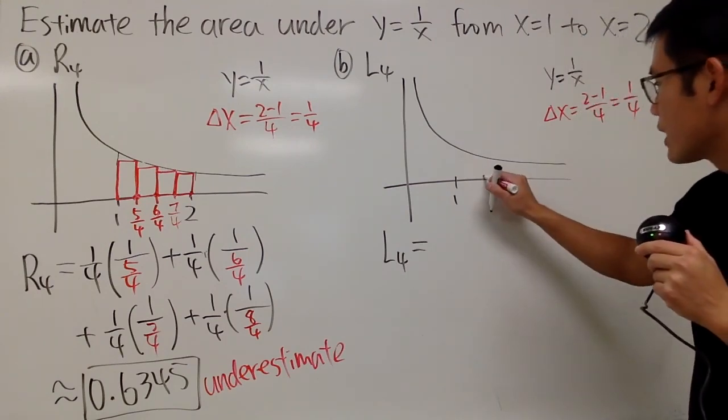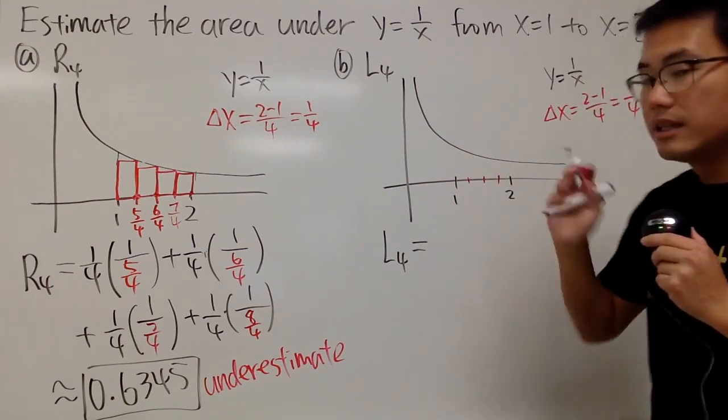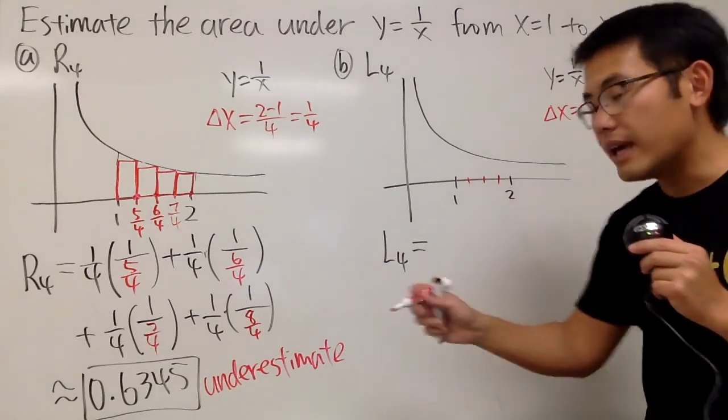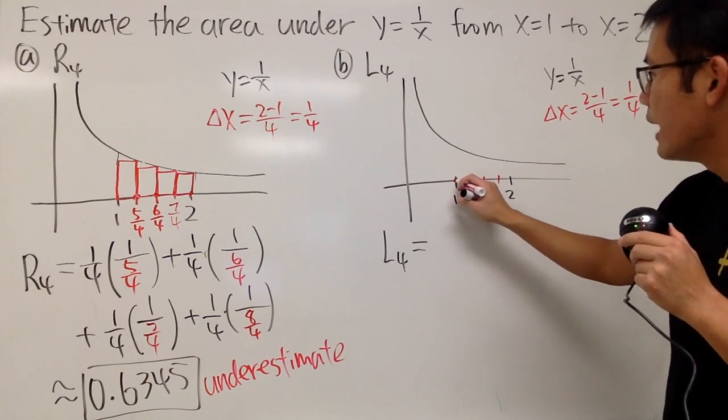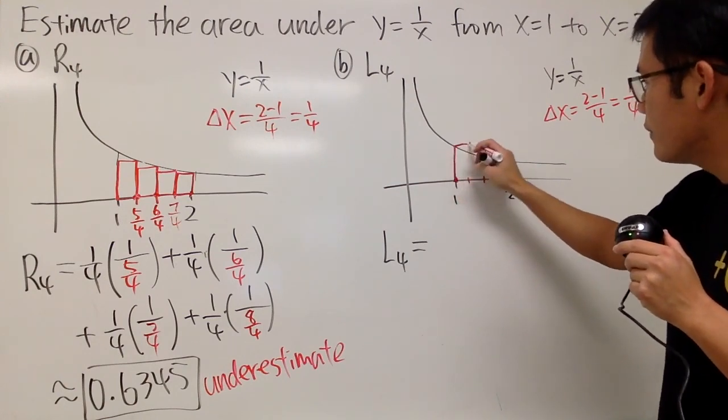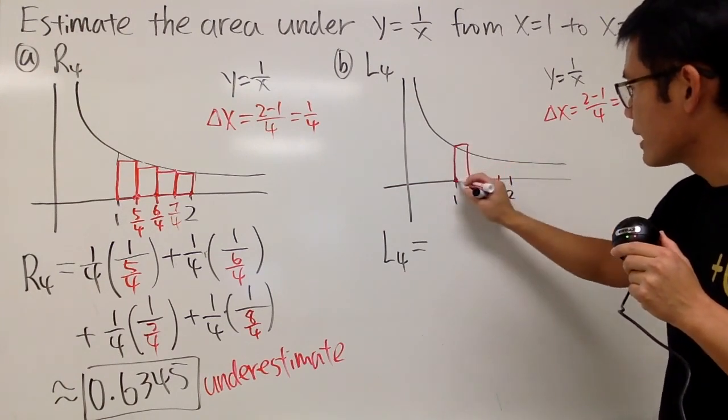First one, again, I will cut, cut, cut. This time though, we start from the left-hand point right here, the left-hand side here, the left-hand point. And then you go up, hit the curve, and then you make a rectangle like that.